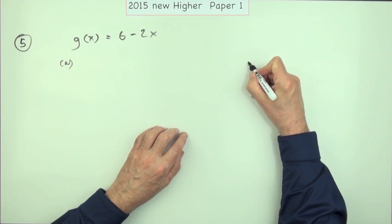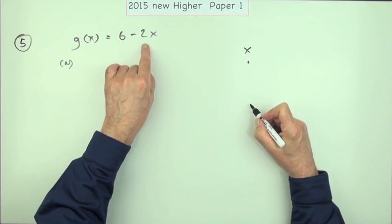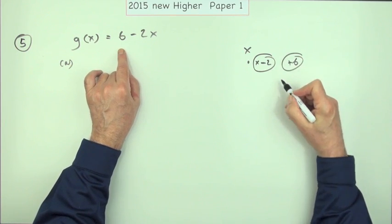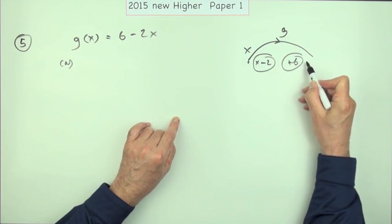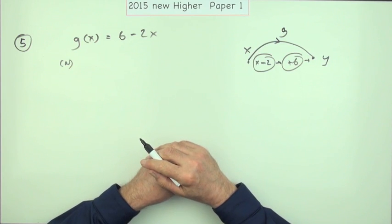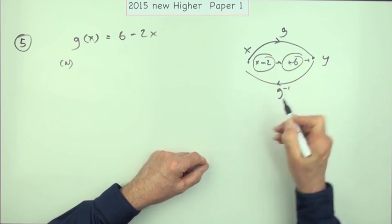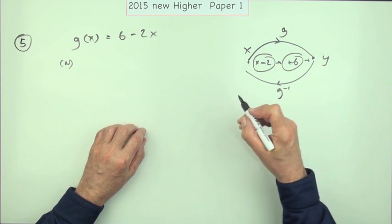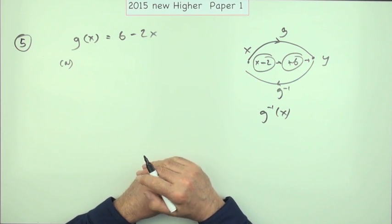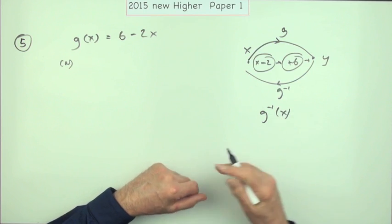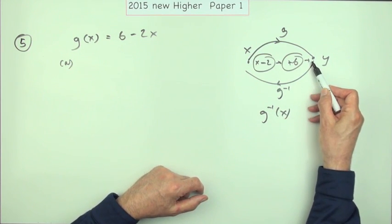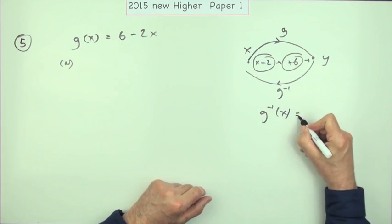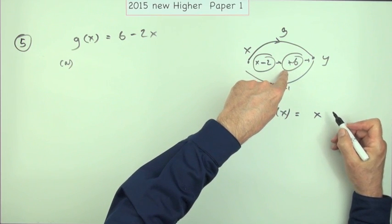What does g(x) say? You start with the number x, multiply it by negative two, and then add six — those are the steps g follows to get the answer, which you'd normally call y. The inverse is how you get back again. Notice it doesn't want the inverse in terms of feeding in y and getting out x — it wants g inverse of x, where x is just a placeholder. So whatever you start with, you do the opposite: take away six...